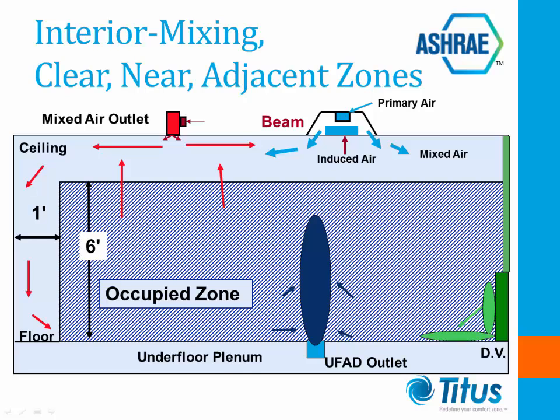This illustration shows the defined occupied area for the different types of air distribution systems. For a fully mixed system where air is introduced above the occupied zone from the ceiling or sidewall outlet, the mixing zone is from the interior wall one foot. For an underfloor air distribution outlet in the core of the building, the near zone is the area around the outlet where the jet velocity exceeds 50 feet per minute. For a displacement ventilation outlet, where low velocity air is introduced horizontally at just above floor level, the adjacent zone is the area near the outlet where velocities are greater than 50 feet per minute. An active chilled beam would be treated like a fully mixed outlet.